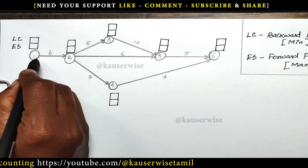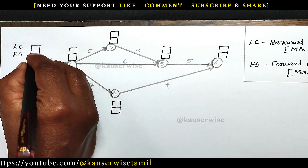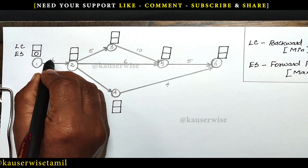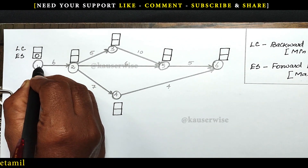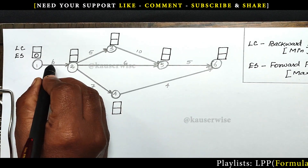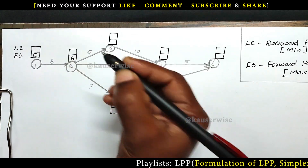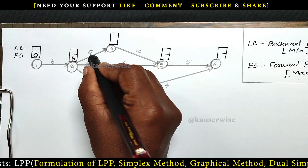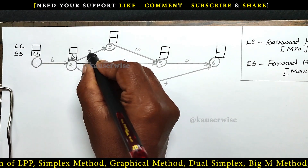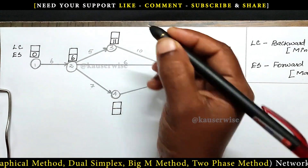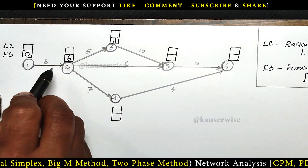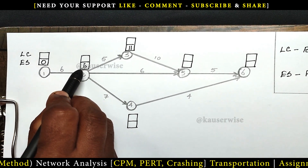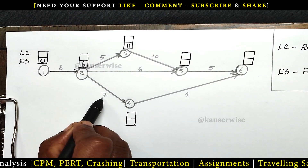For the first node, earliest start time is 0. For the next node, just add the duration to the previous earliest start time. So 0 plus 6 equals 6. Next, node 3: 6 plus 5 equals 11. Next, node 4: the previous earliest start time is 6, so 6 plus duration 7 equals 13.